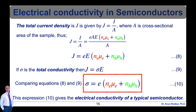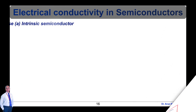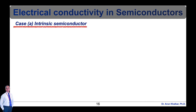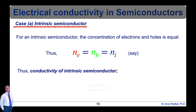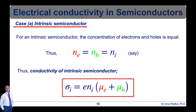Equation 10 gives the electrical conductivity of a typical semiconductor. In general, the variation of mobility with temperature is small, and the large variation in electrical conductivity is due to the large variation of electron concentration with temperature. For Case A — intrinsic semiconductor — the concentration of electrons and holes is equal, so n_e equals n_h equals n_i, where n_i is the intrinsic carrier concentration. Thus, the conductivity of an intrinsic semiconductor is σ_i equal to e·n_i times (μ_e plus μ_h), equation 11.